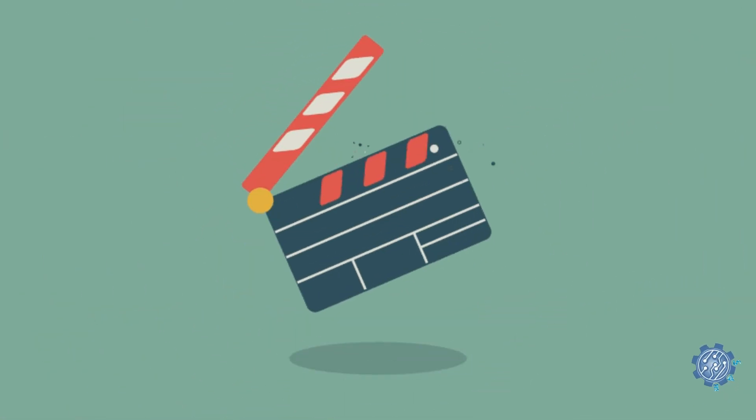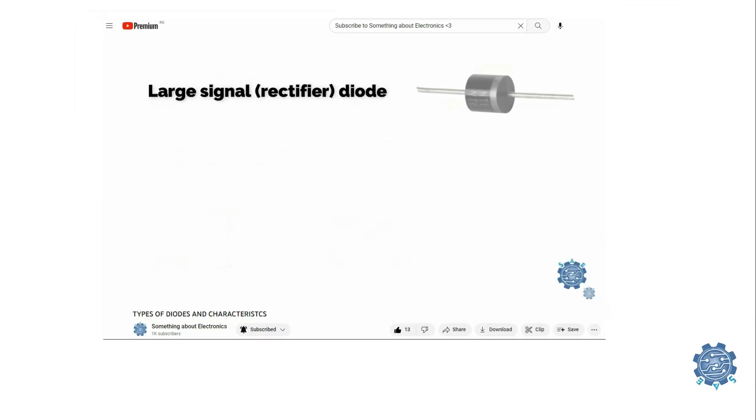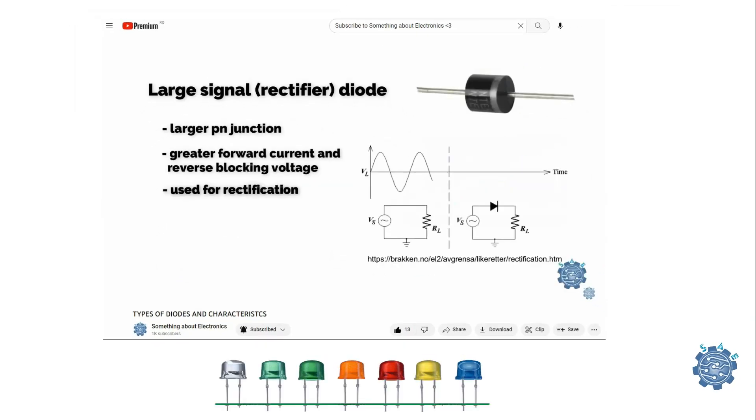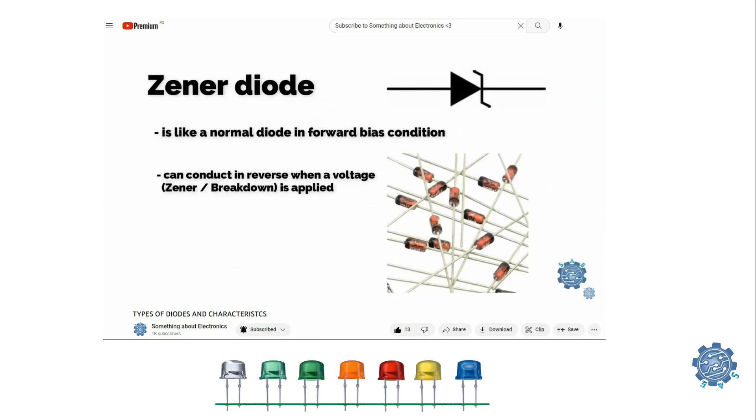Hello everybody! In a previous video we presented almost all types of diodes. The most common are rectifier diodes, Zener diodes, Schottky diodes and LEDs.